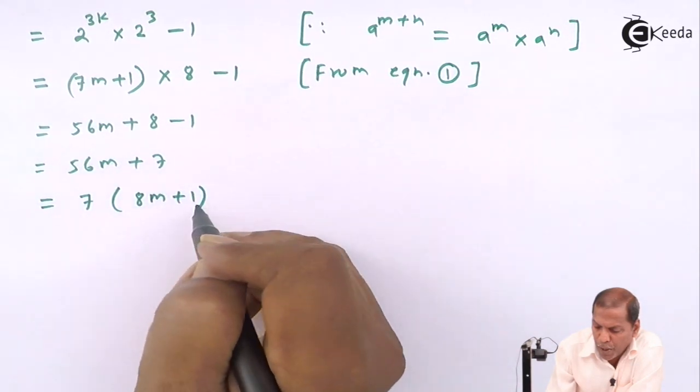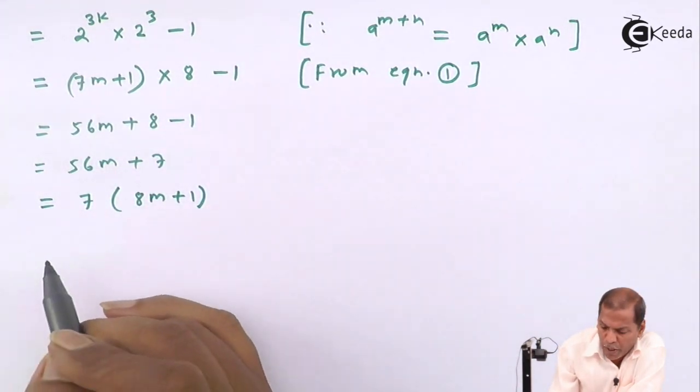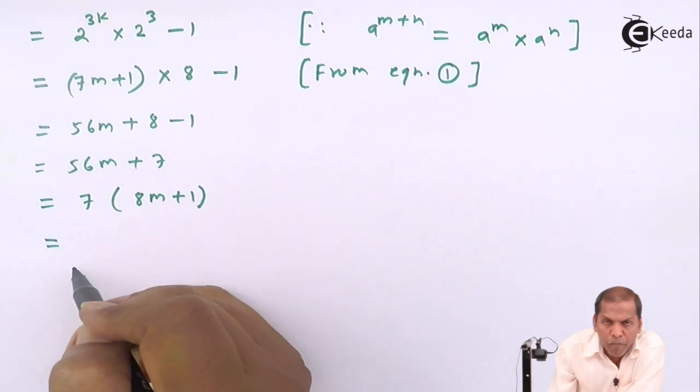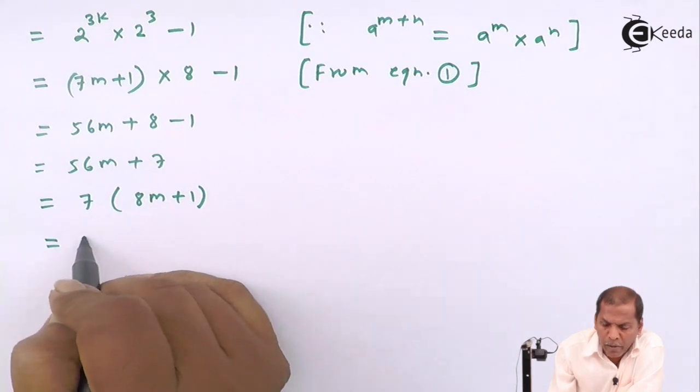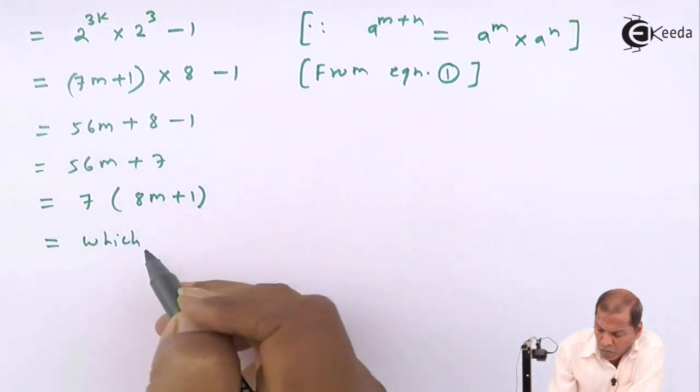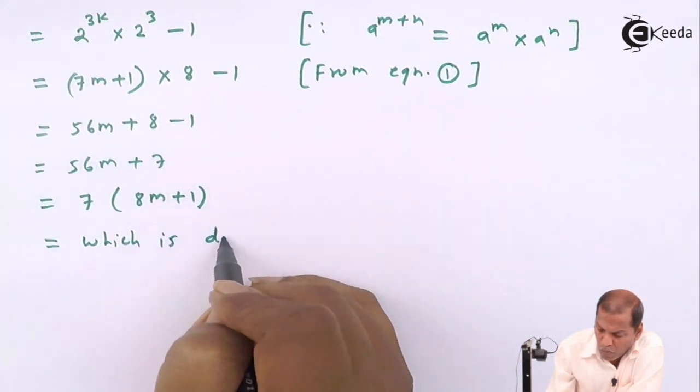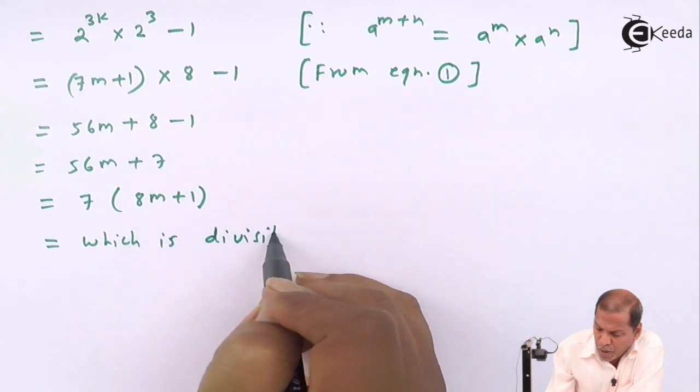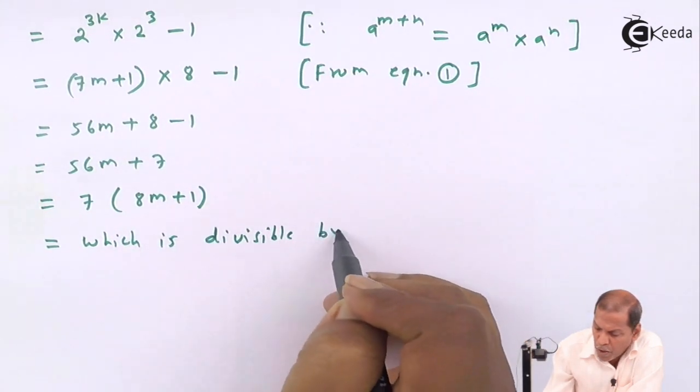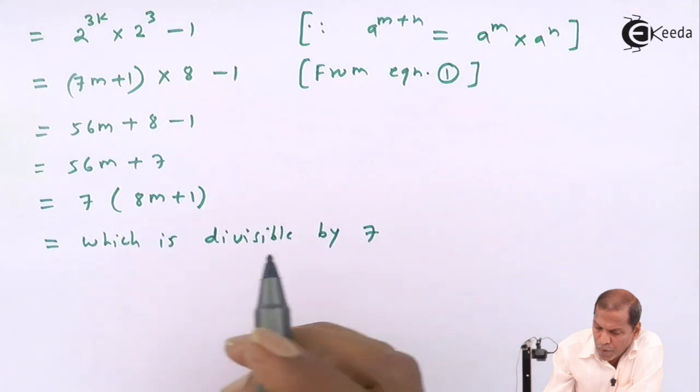From these two we take 7 common. 7 into 8 is 56, 7 into 1 is 7. So now this number is obviously divisible by 7, which is divisible by 7.